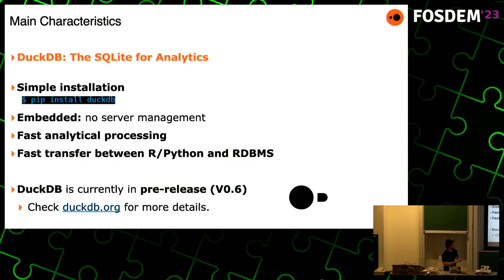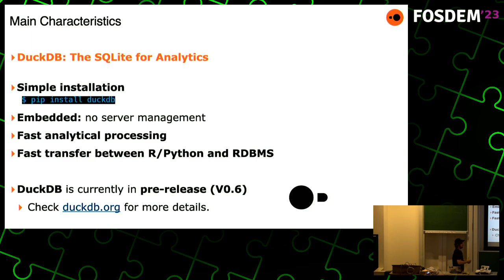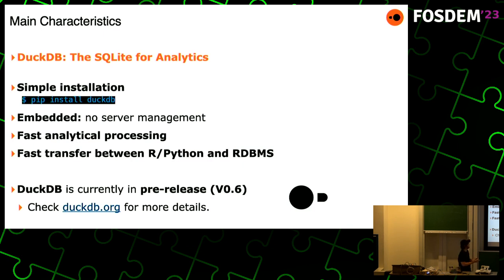DuckDB has a very simple installation. In Python, you just do a pip install and you're good. Since it's embedded, there's no server management. If you want to query a Parquet file, it's two lines of code — no starting a server, no schema creation. The schema is inferred from the object. We also really focus on fast transfer between analytical languages and their tools like Python and R to DuckDB.